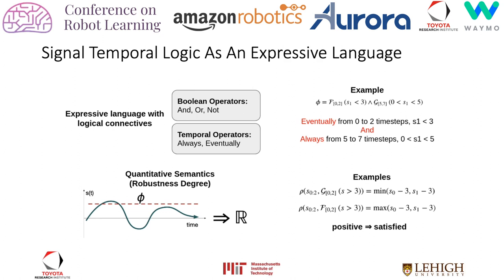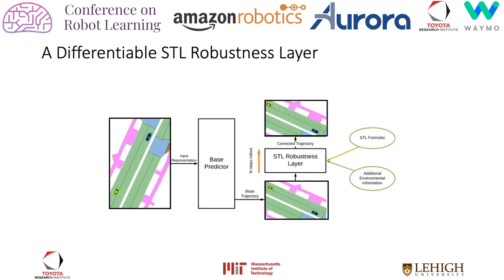The state sequence satisfies the STL formula if the robustness is greater than 0, and violates otherwise. The robustness serves as a continuous measure of satisfaction, which we will use to create rule-abiding predictions. This diagram shows our general architecture.